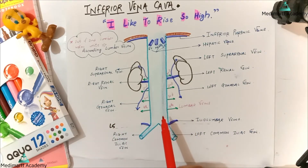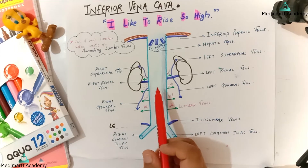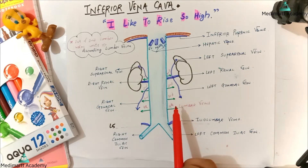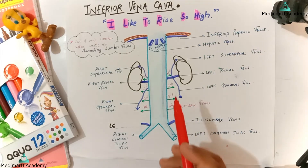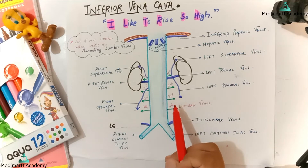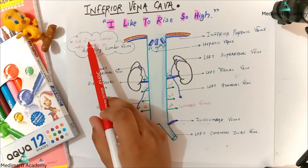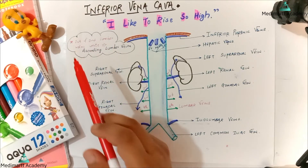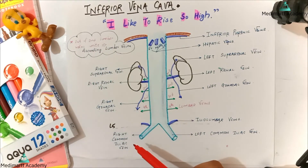There are four pairs of lumbar veins. The third and fourth pairs drain directly into the inferior vena cava. The first and second lumbar veins first unite to form the ascending lumbar veins, and then the ascending lumbar veins drain into the inferior vena cava.